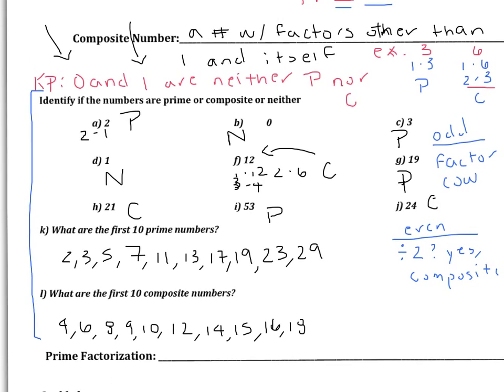Here are your answers — go ahead and pause the video if you need to double-check. Notice that 0 and 1 are both neither prime nor composite.